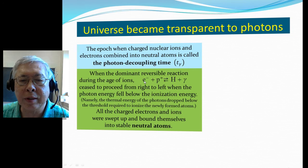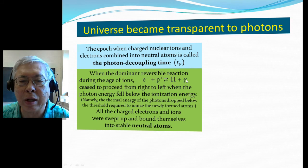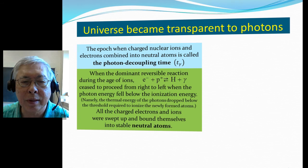The reaction is reversible: electron combines with proton to form a hydrogen atom and a photon. But if you have a strong enough photon, it can photodissociate the hydrogen atom to break up into electrons and a proton.